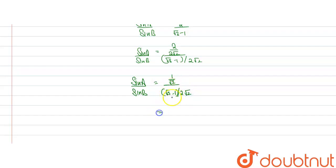Now, 1 by root 2 is equal to sin 45 degree, and also root 3 minus 1 divided by 2 root 2 is equal to sin 15 degree.